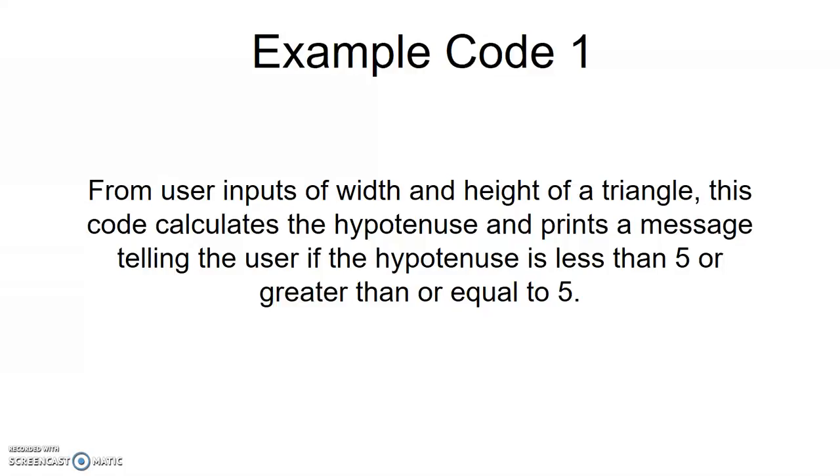So let's go through some examples. Our first example is going to take user inputs of width and height of a triangle and the code will calculate the hypotenuse and print a message to tell the user if the hypotenuse is less than 5 or greater than or equal to 5. Let's look at how we can write this code.